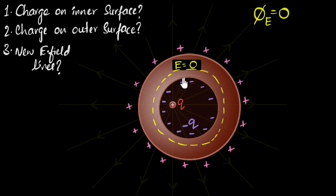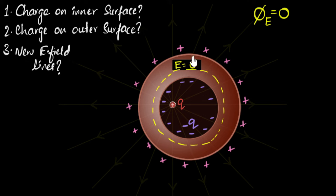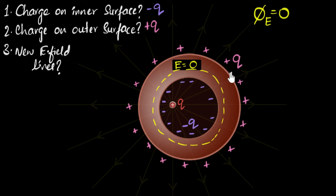What's amazing is that it doesn't matter where I position the charge Q — wherever I move it, the total induced charge on the inner surface must be negative Q. And therefore, the total induced charge on the outer surface should be plus Q. It has to be, because we know the conductor is neutral. So if there is negative Q on the inner surface, plus Q must get induced on the outer surface. Whatever charge we introduce inside, that charge automatically gets manifested on the outside.